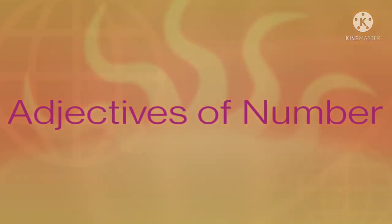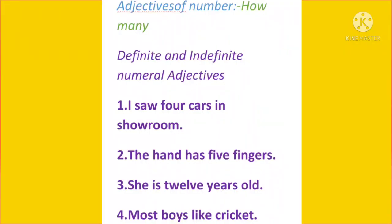The third kind is adjectives of number. These adjectives describe about the number of nouns. The numbers may be definite or indefinite. I saw four cars in the showroom — how many cars? Four. The hand has five fingers — how many fingers? Five. She is 12 years old — how many years old? 12. Most boys like cricket — how many boys? Most. It is an indefinite number.